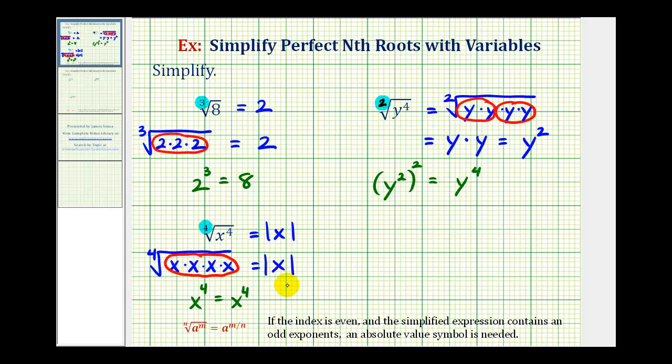Again, it's only needed when the index is even, and the exponent on the simplified expression is odd. Notice in this example here, the index was even, but the exponent on the simplified expression was also even. Therefore, we did not need the absolute value.